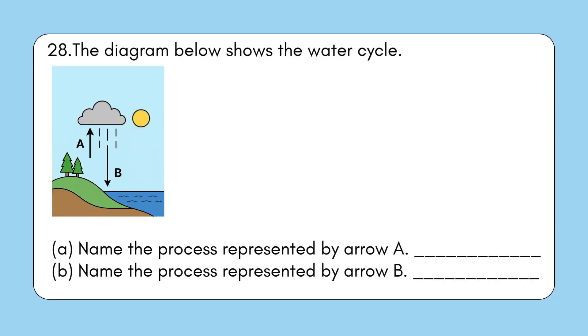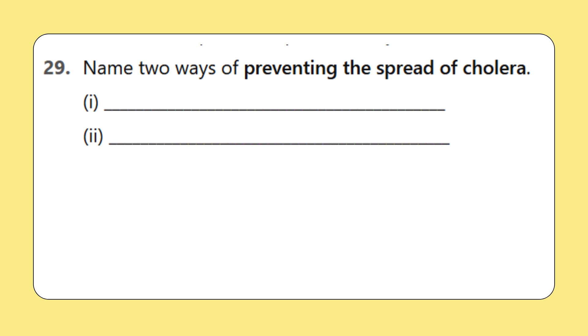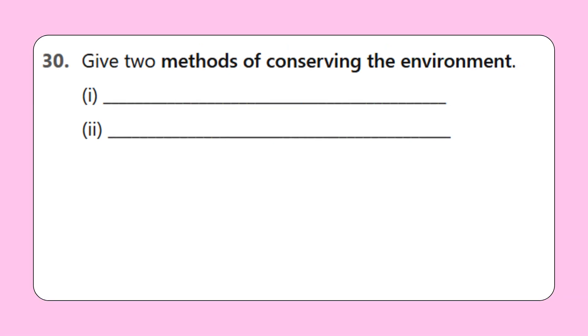Question 28: The diagram below shows the water cycle. A. Name the process represented by arrow A. B. Name the process represented by arrow B. Question 29: Name two ways of preventing the spread of cholera. B. Give two methods of conserving the environment.